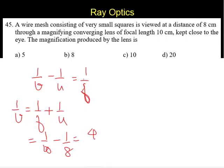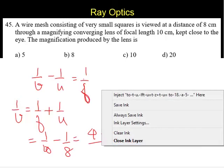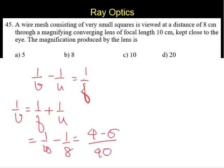It is 4 minus 5, which is going to be minus 1 by 40. So V is minus 40 cm. U already we have taken it as minus 8 cm.